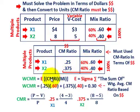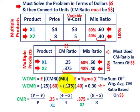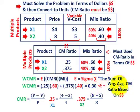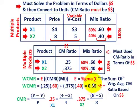Summing across products: for X1, 0.25 times its mix ratio of 0.60; for X2, 0.375 times its mix ratio of 0.40. Adding those together gives us a weighted average contribution margin ratio of 0.30. This is the weighted average contribution margin ratio based on dollar amounts — it's a ratio but it's based on dollar amounts. We'll now use this 0.30 to solve for our different scenarios.